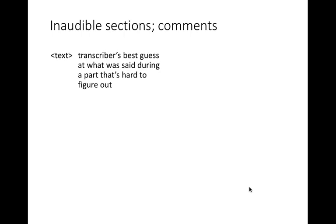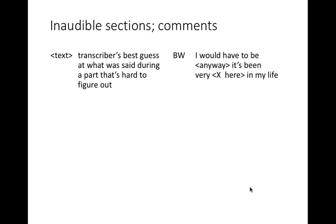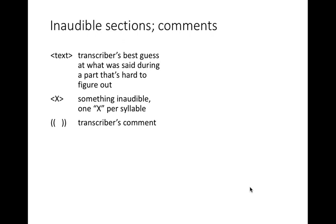And if we have trouble figuring out what a person's saying in a recording, we can just indicate the best guess. For example, in that second line, I think the person said 'anyway' — I'm not sure though. And sometimes you can't even make a guess, but you can hear how many syllables there are. In that third line, 'very [x] here in my life' — there's something I can't make out at all, but I can tell it's just one syllable. We also use a notation to indicate there's a comment from the transcriber — for example, 'takes pen and paper' is not what anyone said, but it's a comment from the person transcribing. So these are the symbols that we often use.